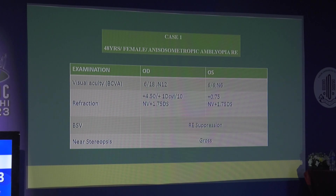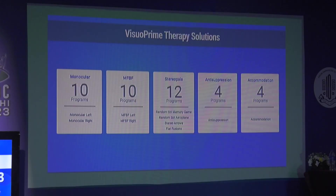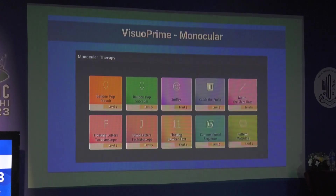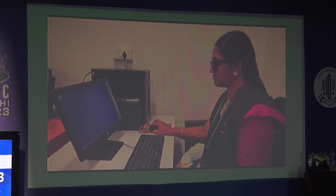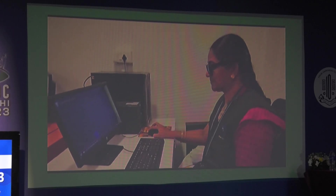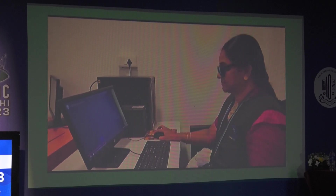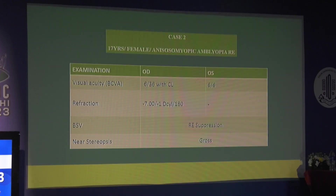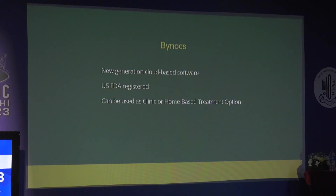One of my staff members — a 48-year-old female with aniso-hyperopic amblyopia in the right eye — is undergoing Vishwa Prime therapy. After two weeks, she showed one line of improvement and is still continuing. A second case is a 17-year-old female with high myopic amblyopia in the right eye; with contact lens correction her vision was 6/36 with right eye suppression and gross stereopsis. After 10 sessions of Vishwa Prime she shows some improvement and is still continuing.